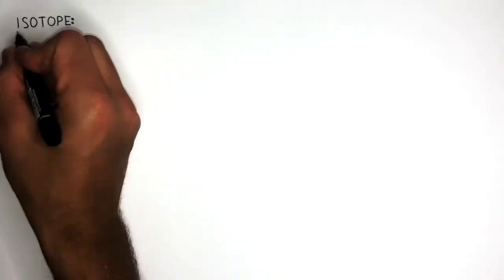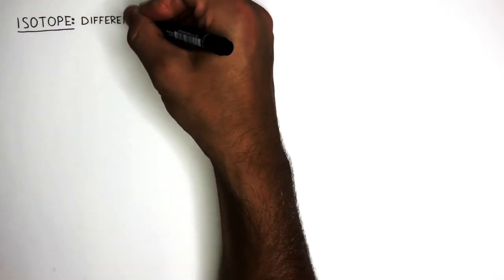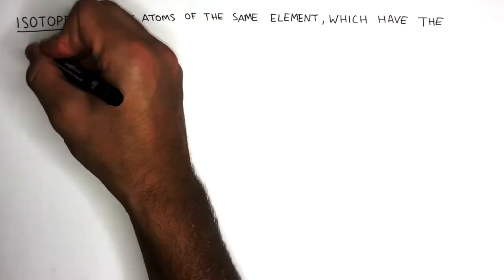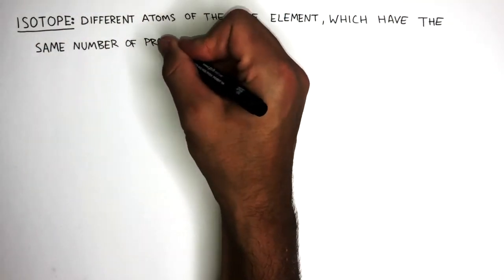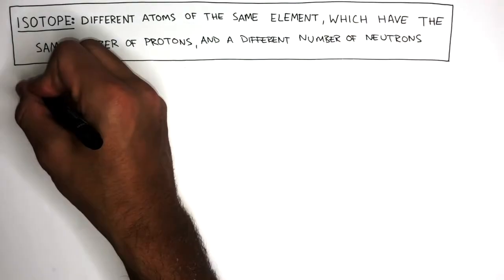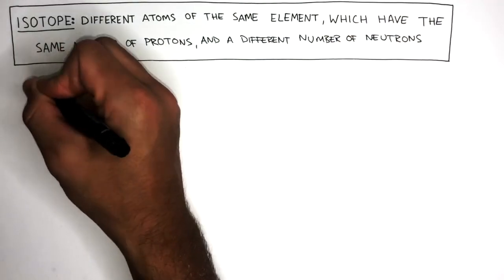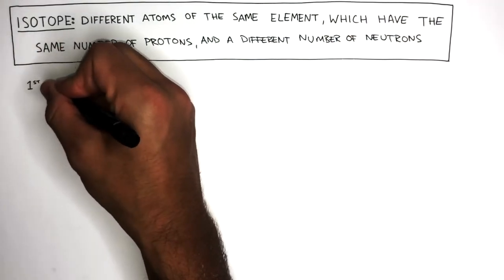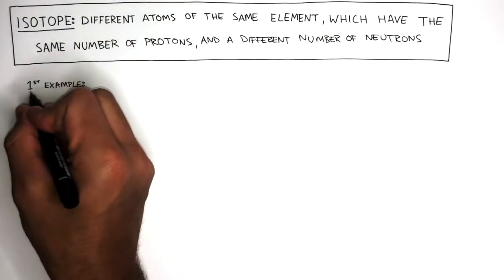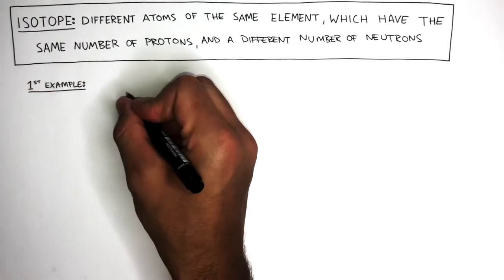An isotope is different atoms of the same element which have the same number of protons and a different number of neutrons. To understand what an isotope is, we're first going to look at three isotopes of carbon.